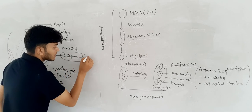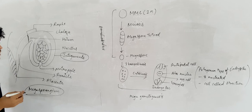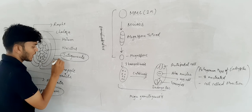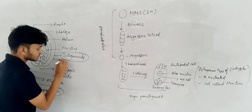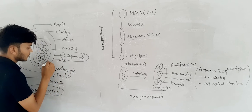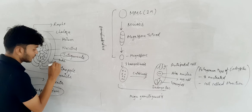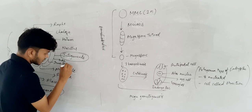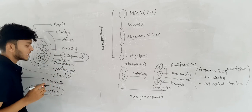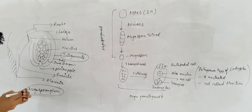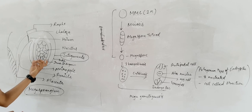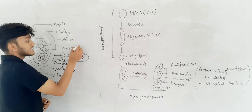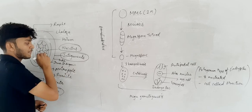The two outer coverings are known as integuments. On the outside we call it the outer integument, and on the inside we call it the inner integument. Inside there is a cell mass, and that cell mass is known as nucellus.